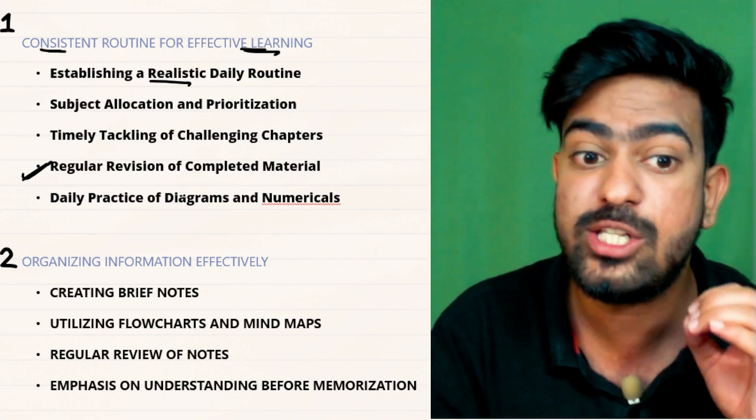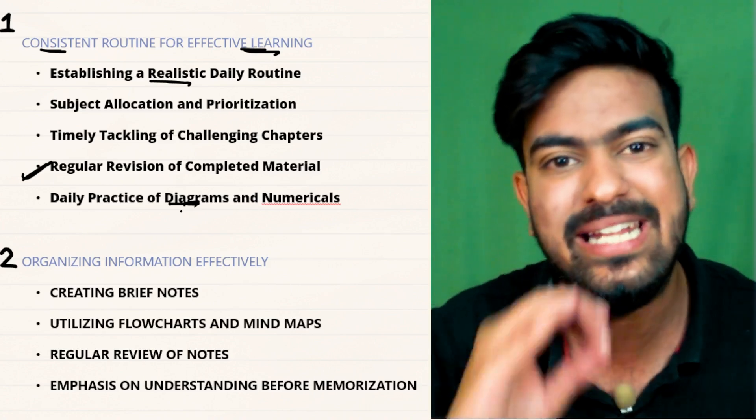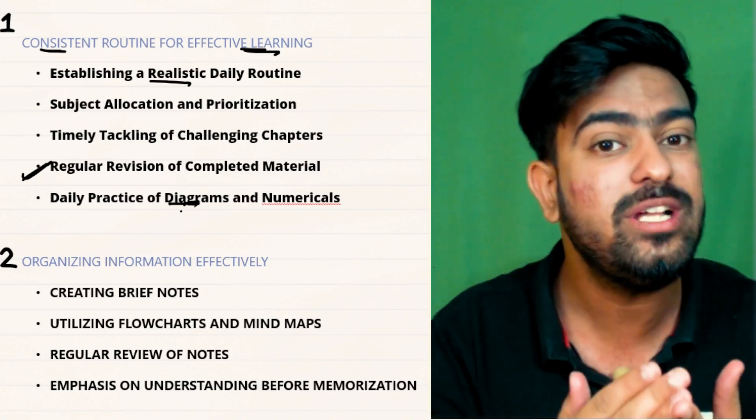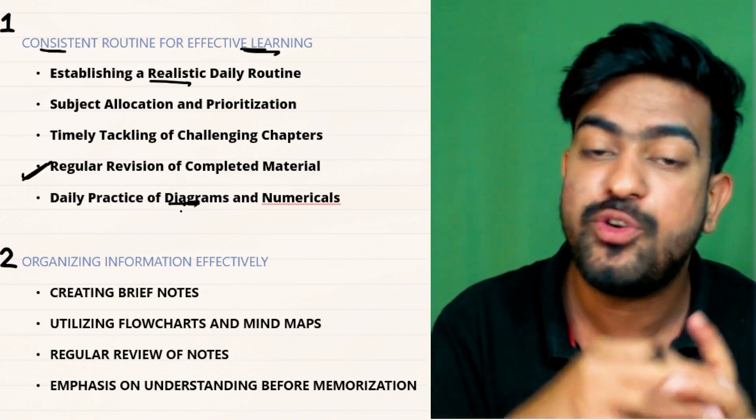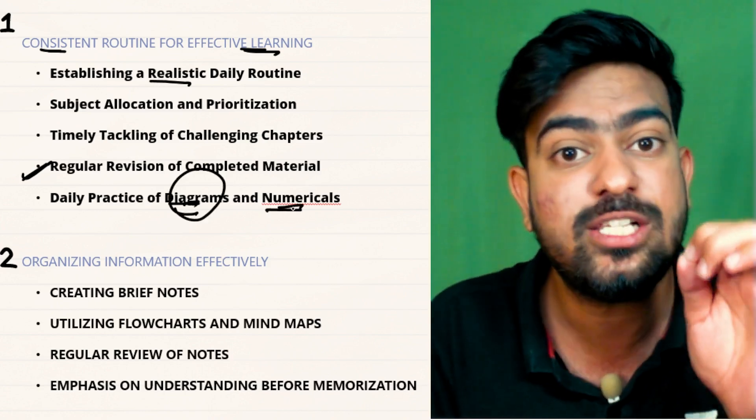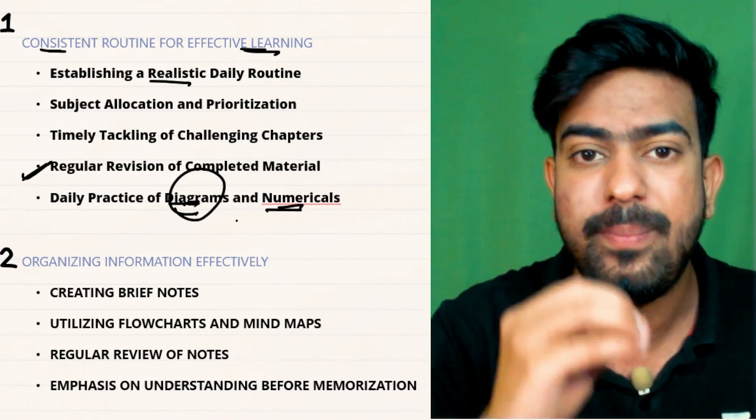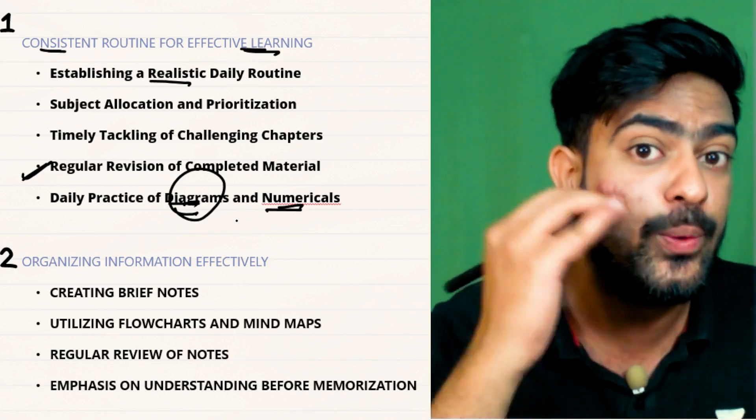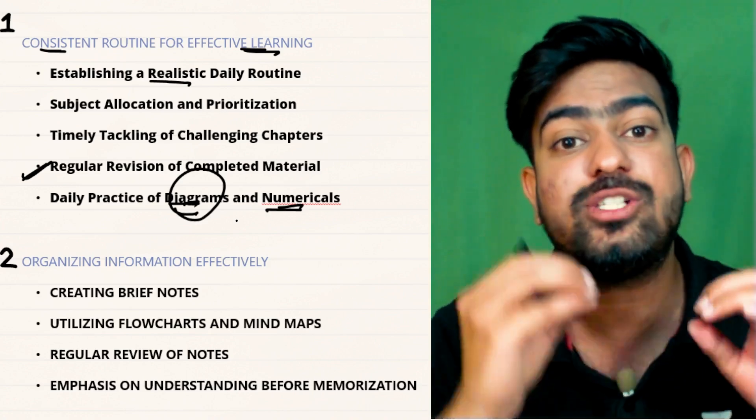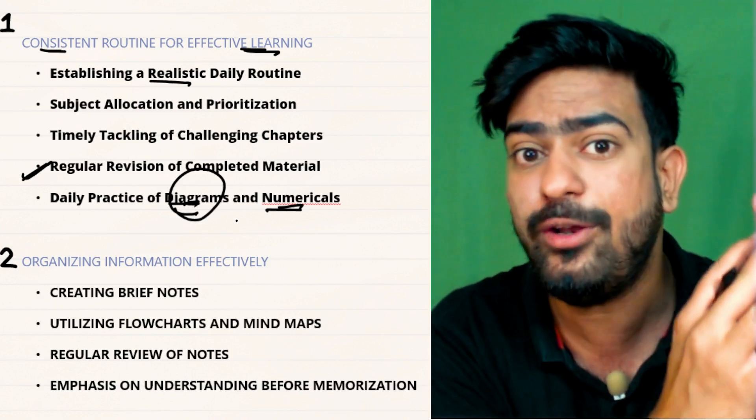Then the revision is also very important and daily practice. In biology, lots and lots of diagram-based questions come and we think that we are going to do it in the last month of the preparation. But during that month we have so much pressure that these easy diagram questions also we are forgetting. So do it beforehand. Practice numericals for physics, lots and lots of numericals. Make a daily routine and say that I have to do 20 numericals daily. So if you're gonna make 20 numericals for physics daily and you have five months, you will be having lots and lots of numericals solved before the NEET examination.